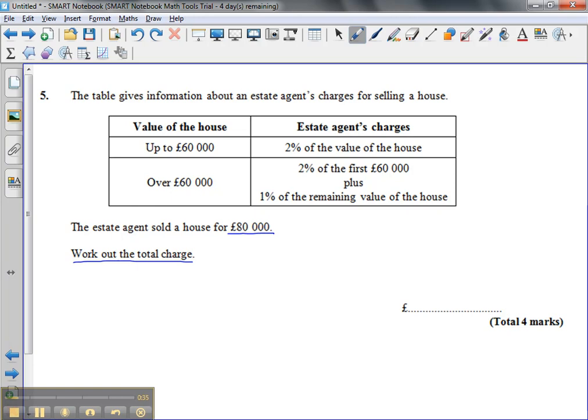We're going to be doing two percentages here. This first section is actually not very useful for us, but for an 80,000 pound house, for the first 60,000 pounds he pays 2% to his estate agent. So we times that by 0.02 using our calculators to find 2%, and we find that comes out as 1,200 pounds.